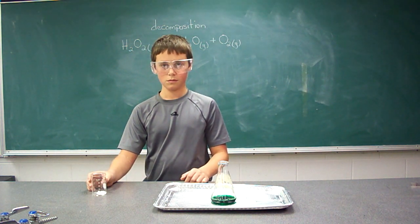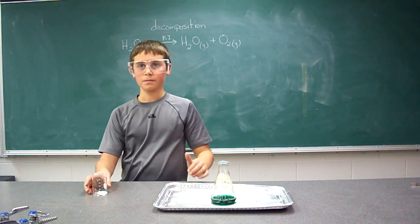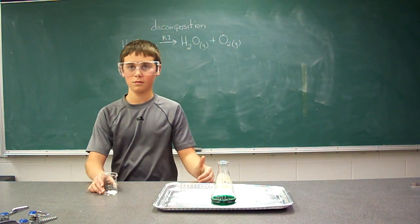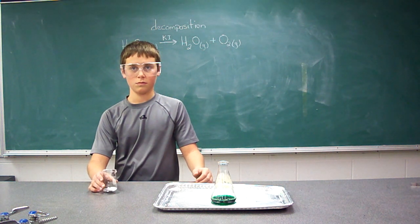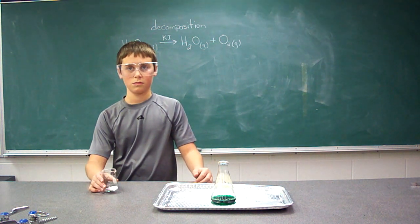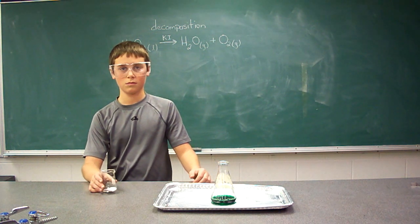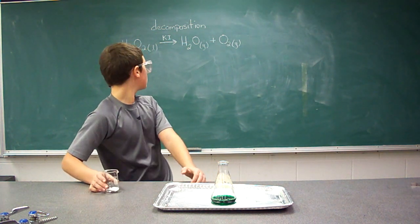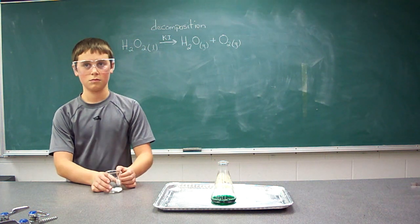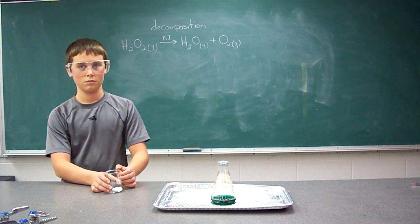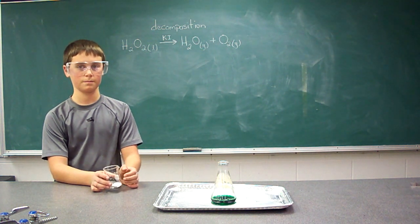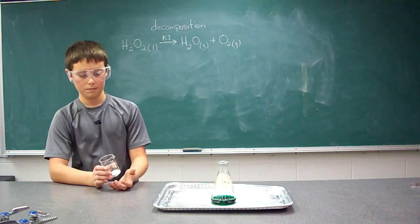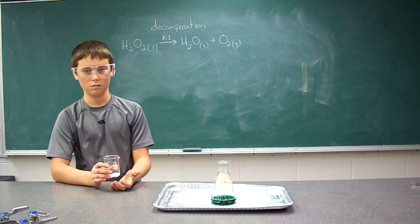So we're going to speed this process up by using what's called a catalyst. In this case the catalyst is potassium iodide, listed in the chemical reaction over the yield sign as KI. Our bodies naturally have enzymes in our digestive tract that help speed up or catalyze the processes of digestion — this catalyst will work in a similar fashion.